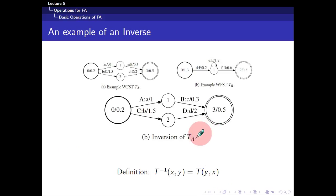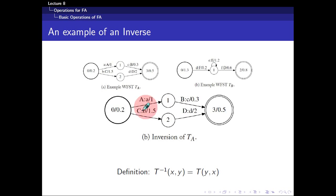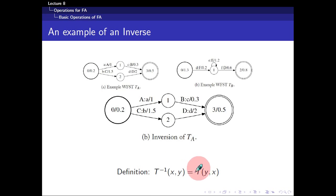Inverse is to flip the input and output labels. So where you had input 'a', output 'A', input 'c', output 'B' — the inverse has input 'B', output 'c', input 'A', output 'a'. The rest remains unchanged. Formally, T-inverse of (x, y) equals the original transducer with y as input and x as output.